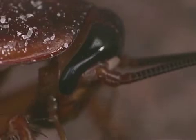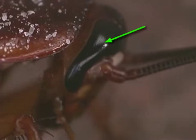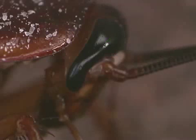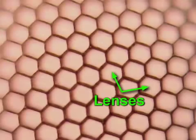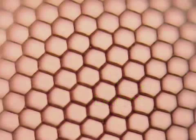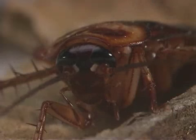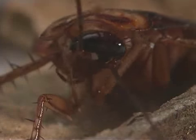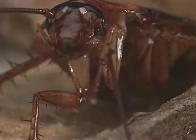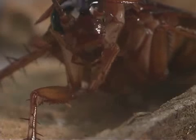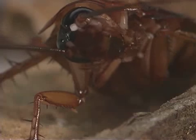Cockroaches, like other arthropods, have compound eyes. Compound eyes are different from human eyes. Compound eyes have many lenses for each eye, while human eyes have a single lens for each eye. The compound eye is excellent at detecting motion. Therefore, insects respond better to moving objects than to stationary ones.